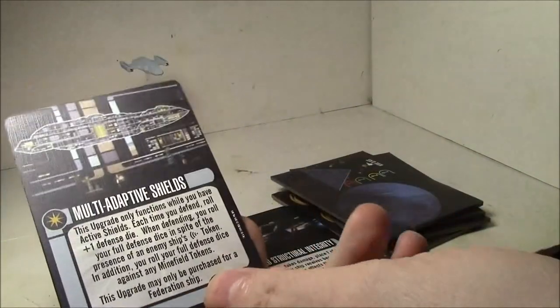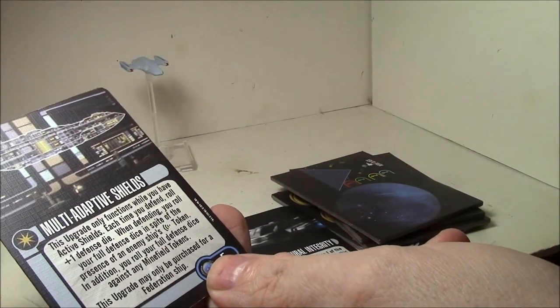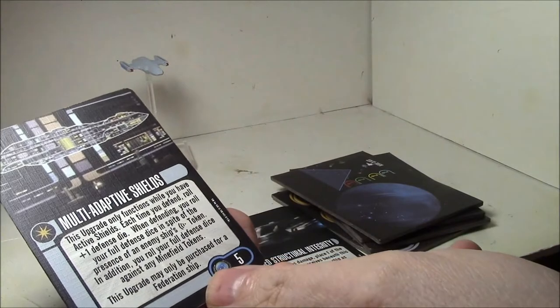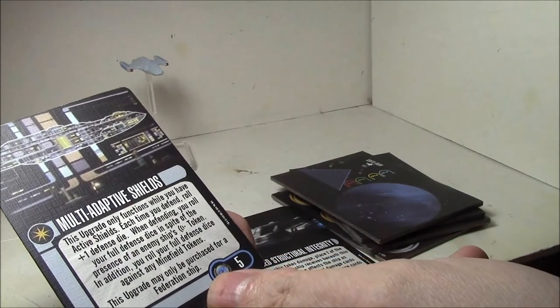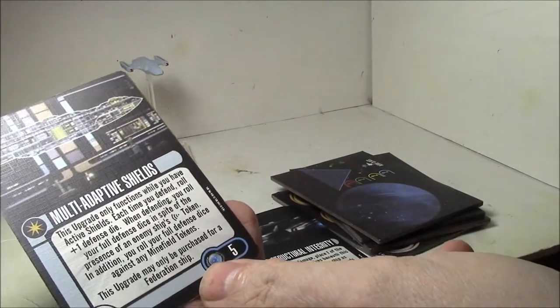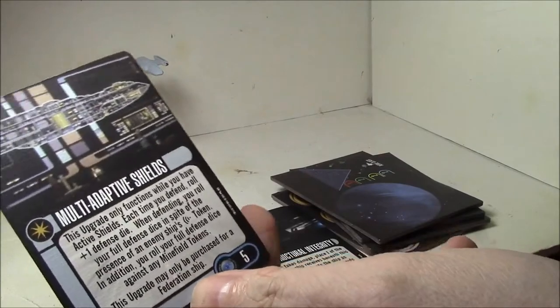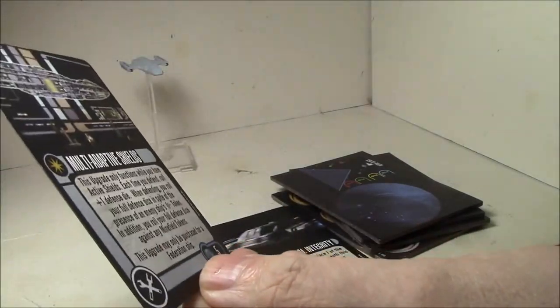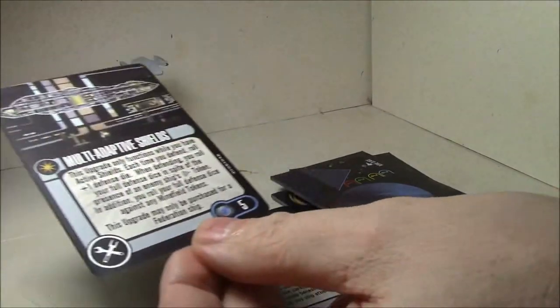Let's take a look at the cards. First, we have Multi-Adaptive Shields. This upgrade only functions while you have active shields. Each time you defend, roll one plus one defense die. When defending, you roll your full defense dice in spite of scan tokens and you roll your full defense dice against minefields. This upgrade may only be purchased for a Federation ship. It's five points. That's quite a bit of defense to your ship. It's a completely passive ability, so that's really cool.